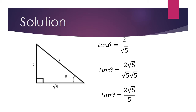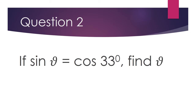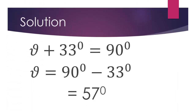Number 2: If sin theta is cos 33 degrees, find theta. Solution: theta plus 33 degrees is 90 degrees, therefore theta equals 90 degrees minus 33 degrees, which gives us 57 degrees.